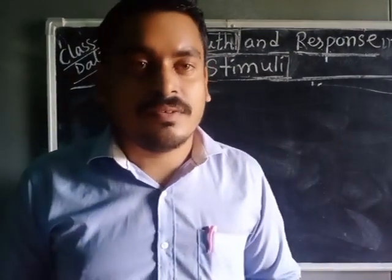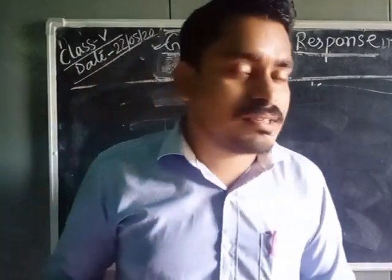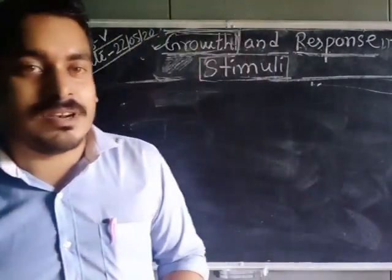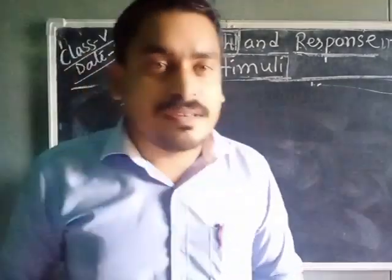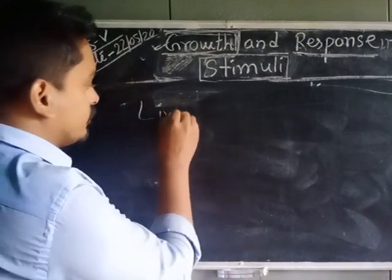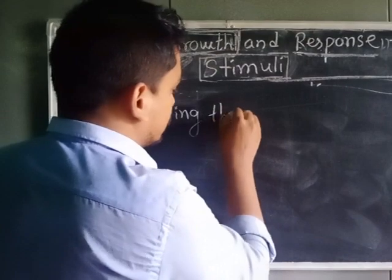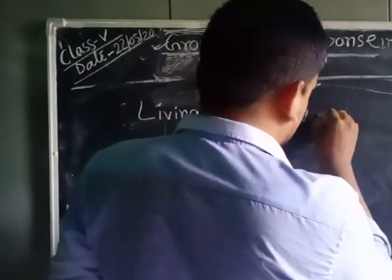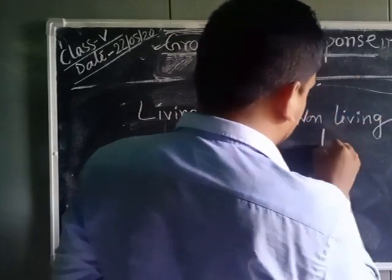My dear loving children of standard 5. Today I am going to start the online classes for you and before starting the class I want to tell you one thing: in your previous classes you have already learned that the things around us are divided into two types — living things and non-living things.